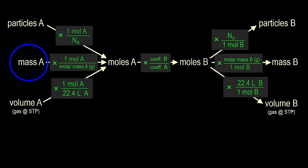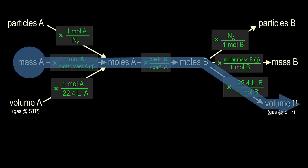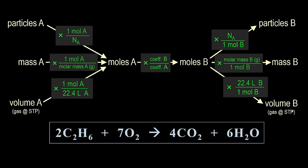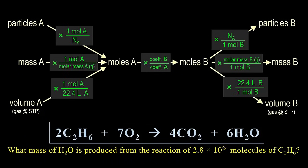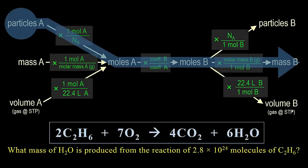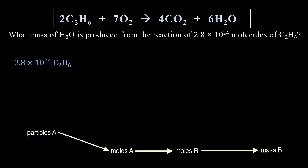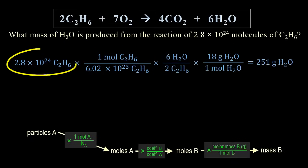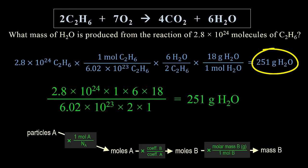A problem giving mass and asking for gas volume would use that pathway in conversions. You can also use the map to end at moles or start with moles given. Using the combustion of C2H6, let's use the map to find the mass of water produced from a given number of molecules of C2H6. The map gives us the path from particles to mass: first convert molecules to moles of C2H6, then to moles of water, then to mass of water. Reacting 2.8 times 10 to the 24 C2H6 molecules produces 251 grams of water.